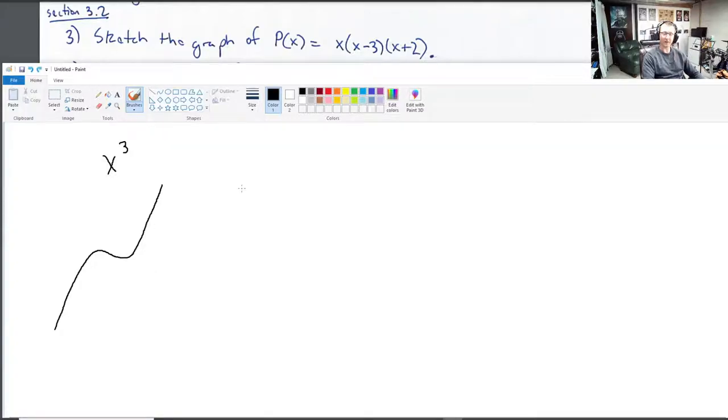So to find out the information about the wiggle, what do we do? We look at each factor. We look at the multiplicity of that factor. There's nothing written in its power, so it's a 1. That's an odd multiplicity. What about x minus 3? Same. And x plus 2? The same. All of these have odd multiplicity.